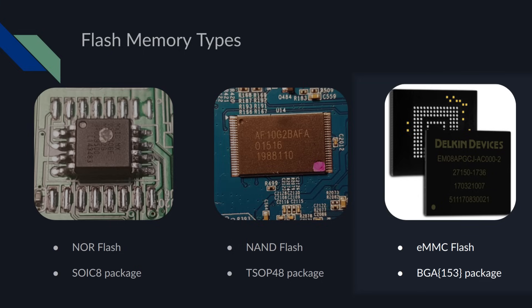Lastly, on the right-hand side, we have eMMC flash. This is a flash type that has very high density — meaning very large capacities — and it comes in a ball grid array package, where the pins are under the chip.